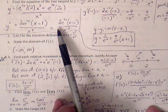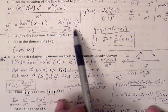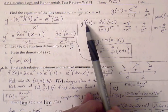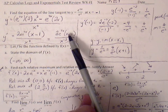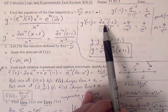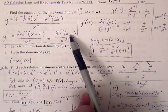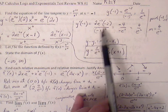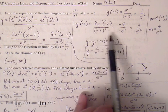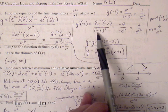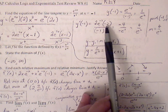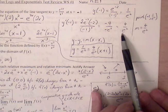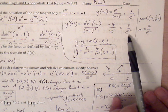Now we can find our slope by plugging negative 1 into our derivative, because we want to evaluate the derivative at that point. Plugging negative 1 in for all the x's, we're left with 2 e^(negative 2) times negative 2 over negative 1 cubed. The negatives cancel out, the e squared comes down to the denominator, and the two 2's combine to give 4 over e squared. So our slope at x = negative one is 4 over e squared.